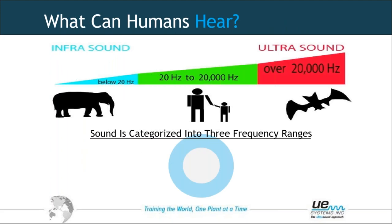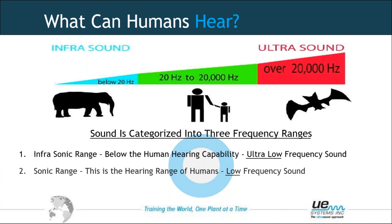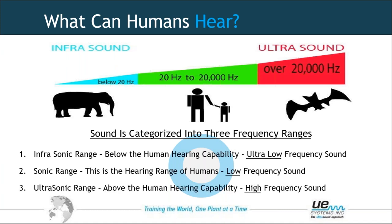We'll start with the basics and build up to today's webinar topic. What humans can hear: sounds with frequencies of 20 Hz to 20 kHz. These sounds are categorized into three ranges — the sonic range (20 Hz to 20 kHz), the infrasonic range (below 20 Hz, which are ultra-low frequency sounds), and above the sonic range we have the ultrasonic range, which we are going to talk about. These are high frequency sounds with some distinguished characteristics.